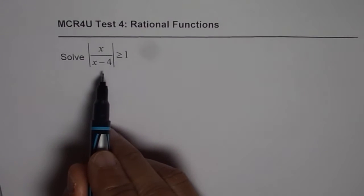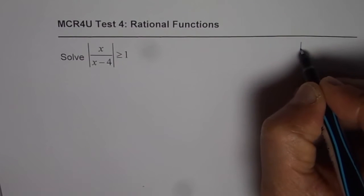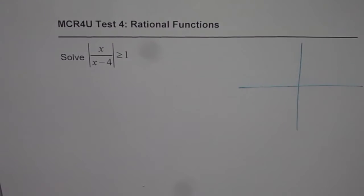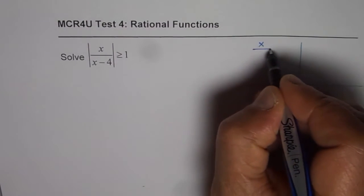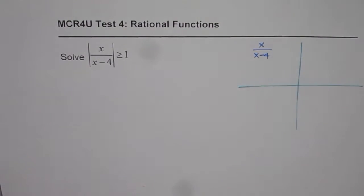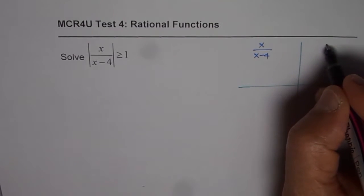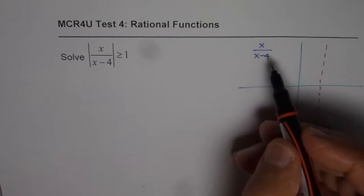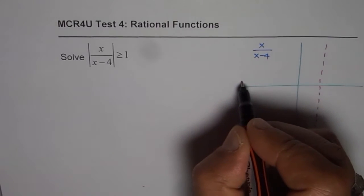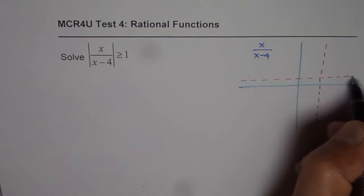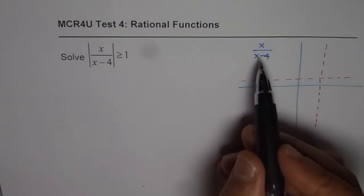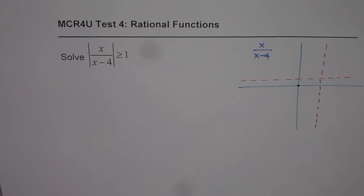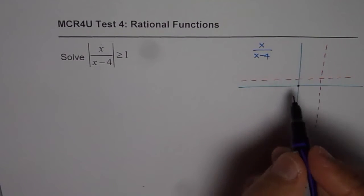Let's first analyze this function graphically and then provide an algebraic solution. On the coordinate plane, we'll consider the function x over x minus 4. The vertical asymptote is at x equals 4, and the horizontal asymptote is at y equals 1, since x over x gives 1. The x and y intercept is at 0, since when x equals 0 we get 0. These points help us sketch the graph.